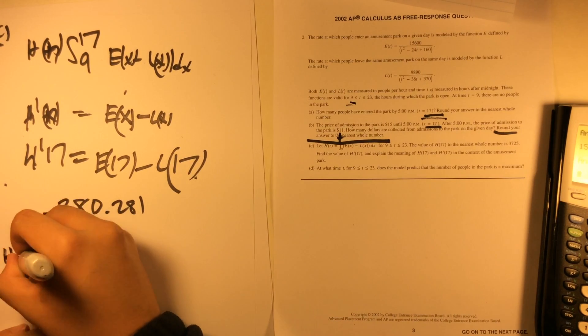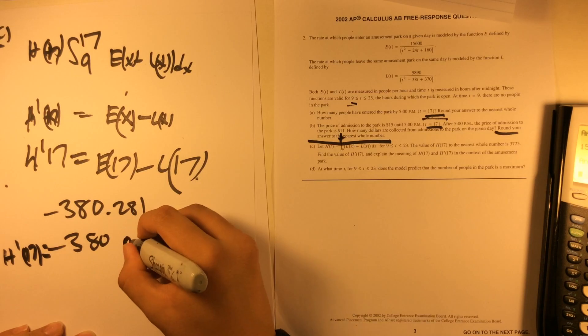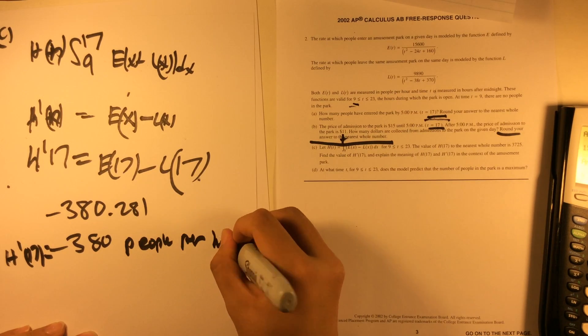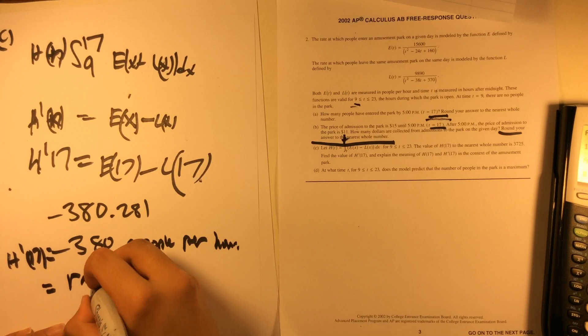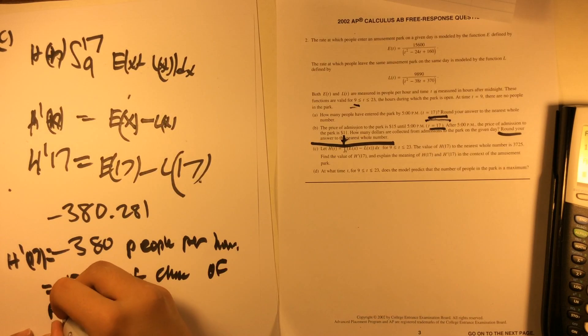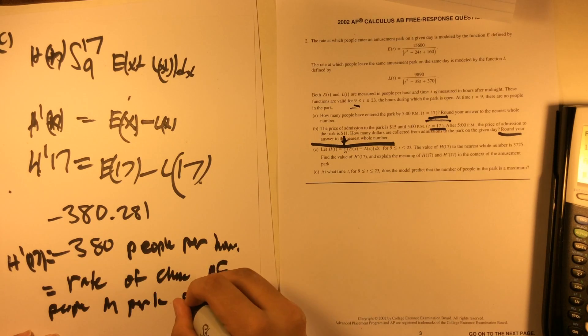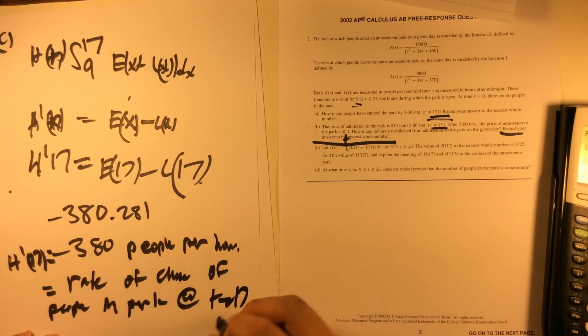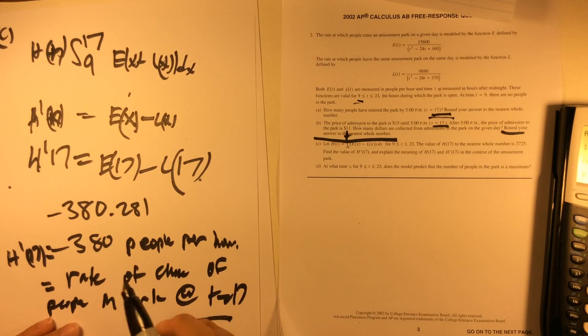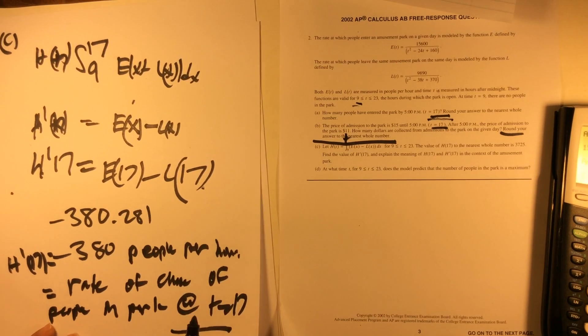H prime of 17 equals this number, and this is a rate per hour. This also means rate of change of people in park at T equals 17. T equals 17 is very important, this is probably the only tricky part in the question. Putting T equals 17, this will lose you a point if you do not reference this.